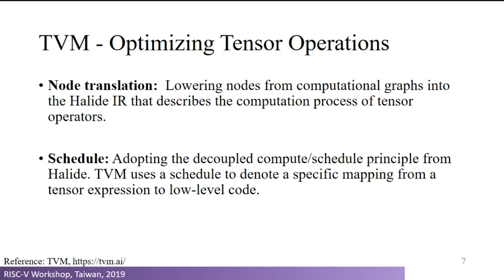Node translation corresponds to the Halide IR part just described. The schedule is the way to carry out the second-level optimization — it maps the expression of the operator into the correct form for low-level code generation.